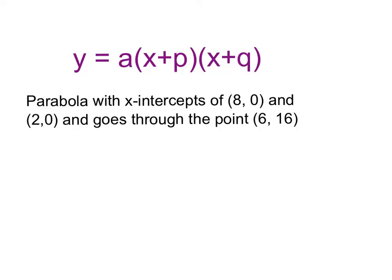Here we're given information about a parabola with x-intercepts at eight zero and two zero. I'm going to draw a picture of what this might look like. We also have a point at six comma sixteen. The graph comes up, goes up a little bit further, and then starts to come back down. So we know the parabola's x-intercepts and we know it goes through the point six comma sixteen.